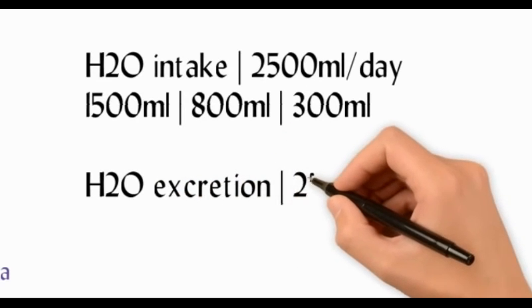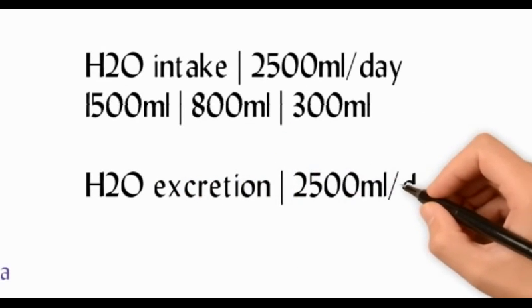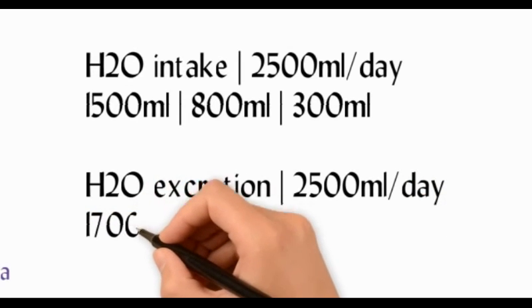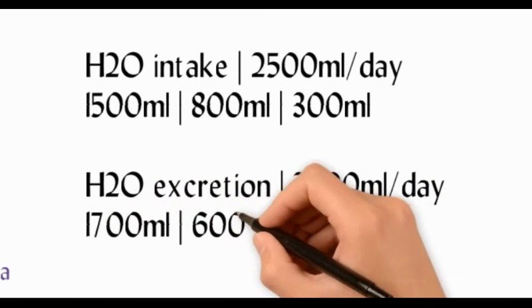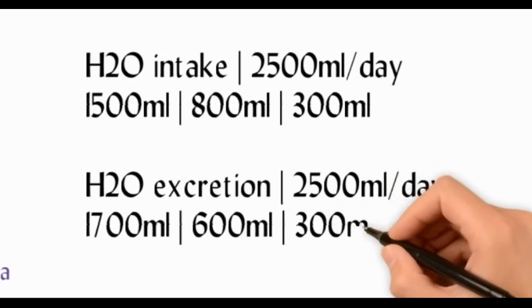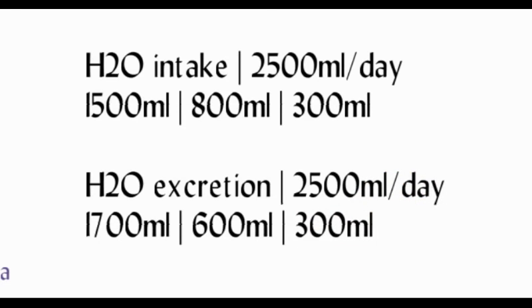On average, a 70 kilogram individual will excrete 2.5 liters of water a day: 1.7 liters of urine, 600 mL of insensible loss on the skin and lungs, and 300 mL of water in the stool.